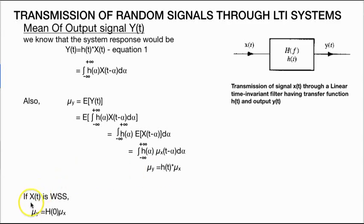If a random process is WSS in nature, then its output mean will be equal to the power spectral density of the transfer function at 0 multiplied by the mean of the input signal.